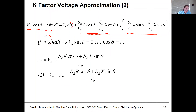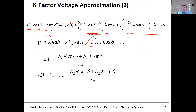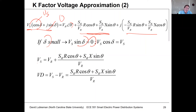In distribution systems, the angular change in voltage is small. If delta is small, sine of a small number — say a couple degrees — is essentially equal to zero, and cosine of a small number is going to be about one. So we can make the approximation that the real part is just Vs and the imaginary part is zero. The sending end voltage magnitude is then the receiving end voltage plus the drop across the line.